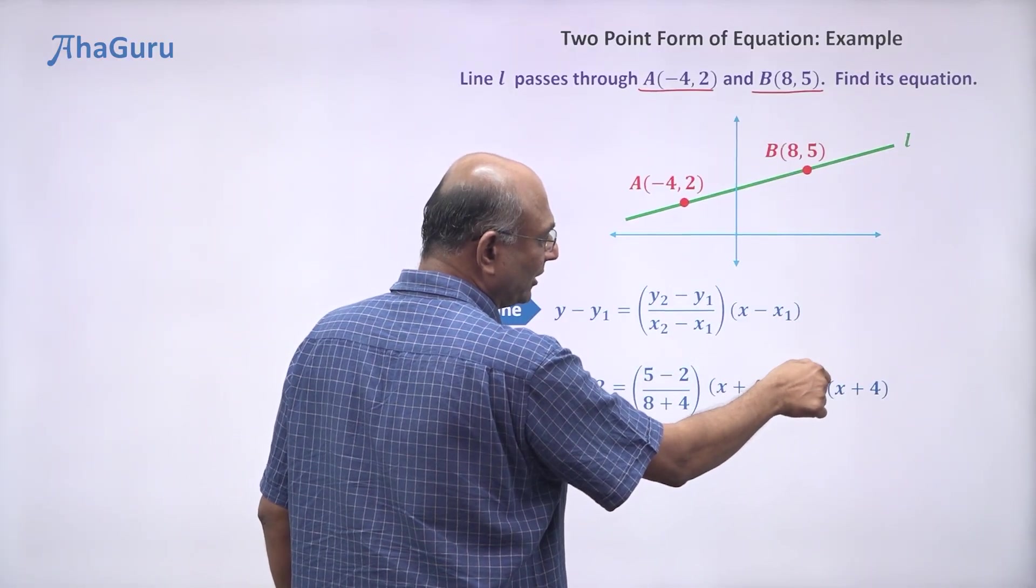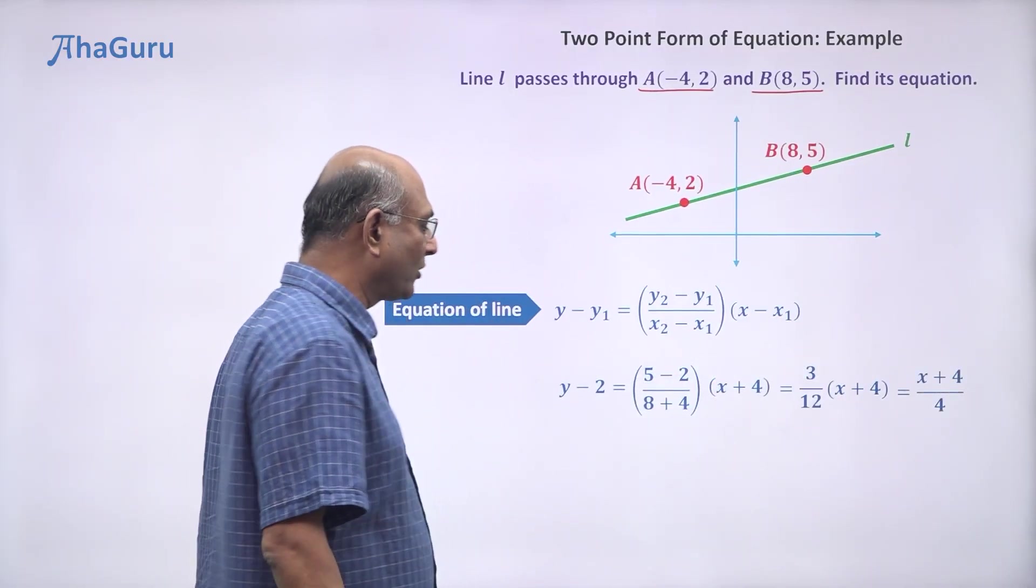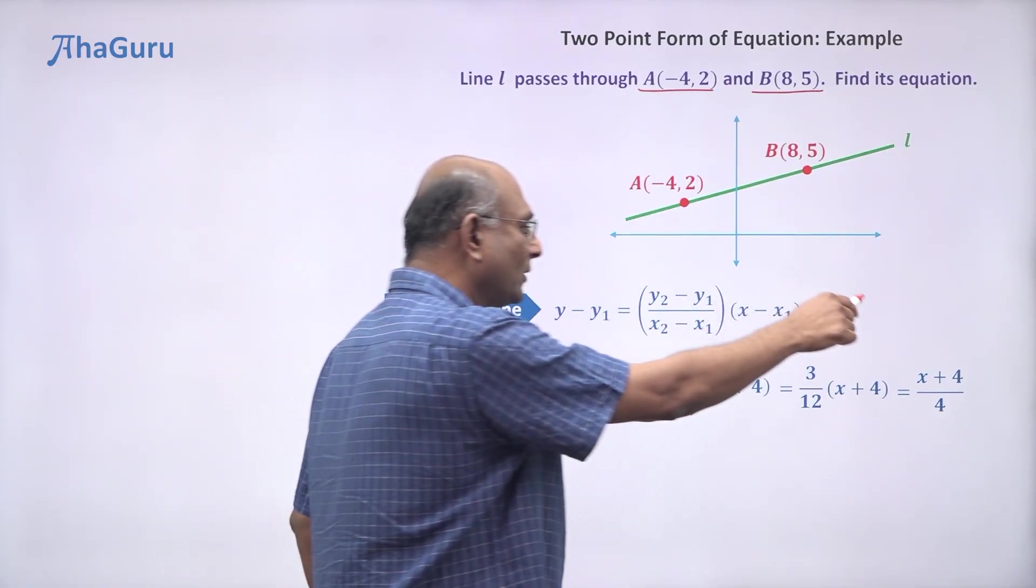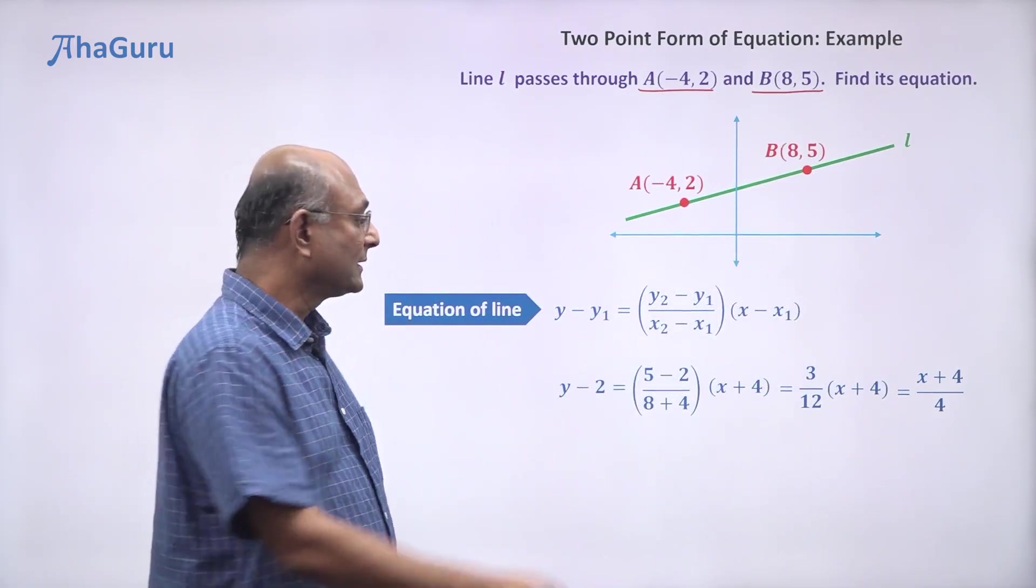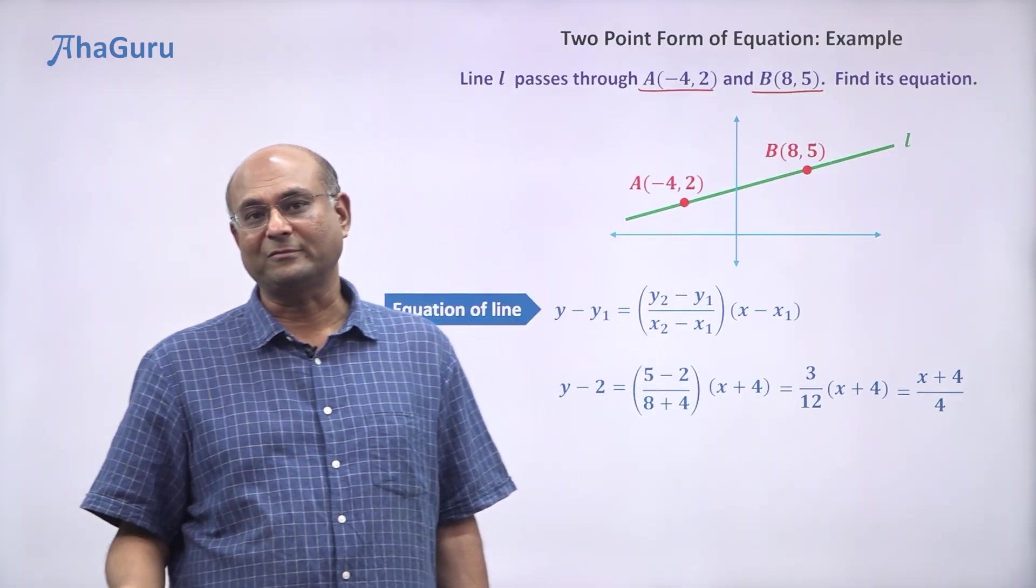Well, that is going to give me 1/4, so (x + 4)/4. So y - 2 = (x + 4)/4. That is the equation of the line.